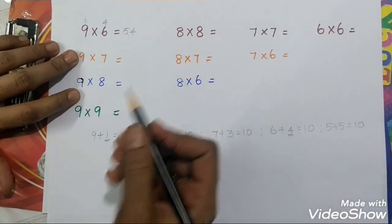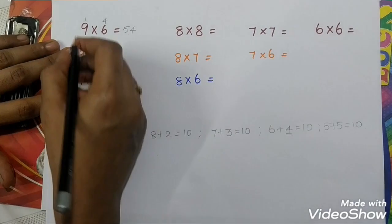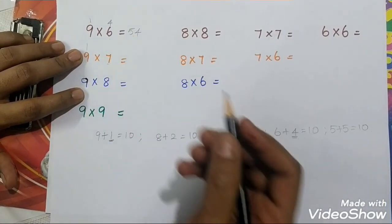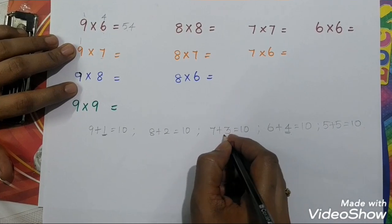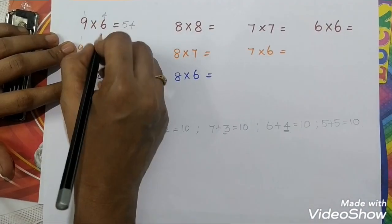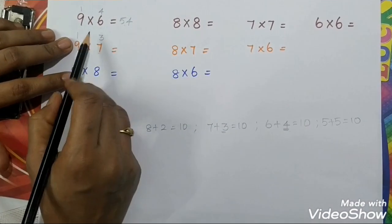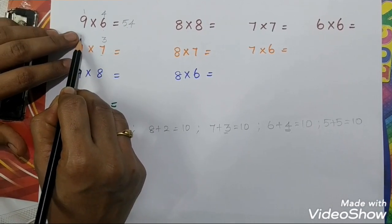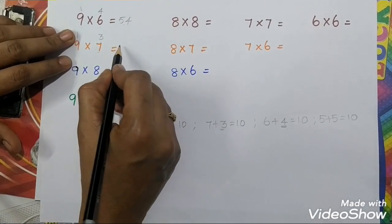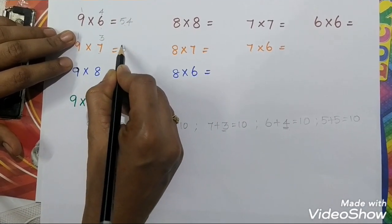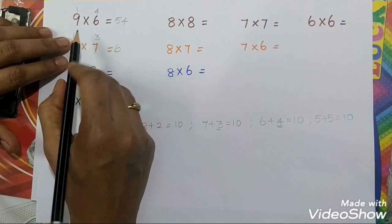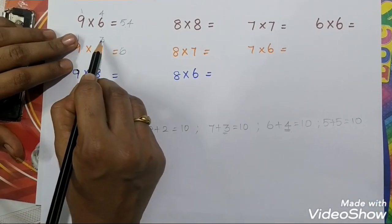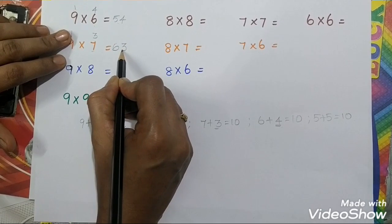Next: 9 times 7. 9's friend is 1, and 7's friend is 3. Cross subtraction: 7 subtract 1 equals 6. Then multiply the friends: 1 times 3 equals 3. So 9 times 7 are 63.